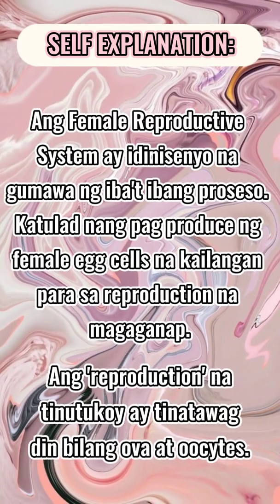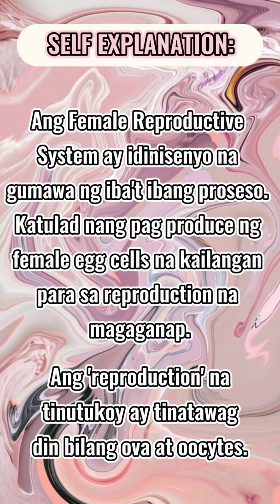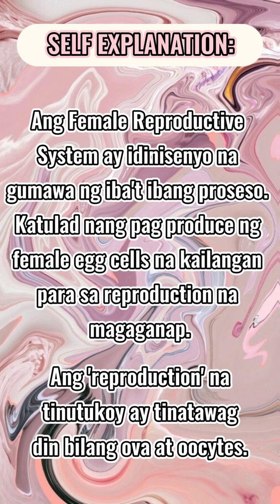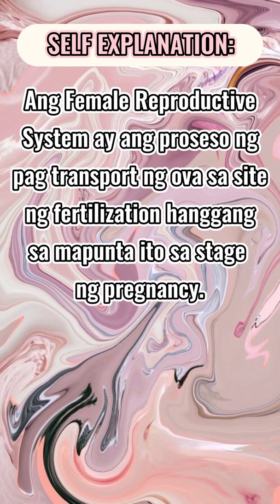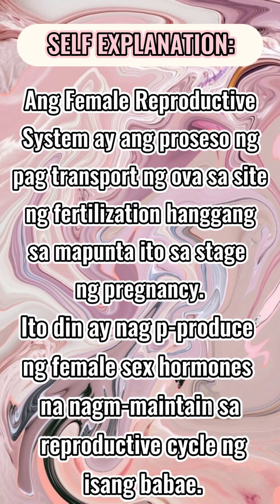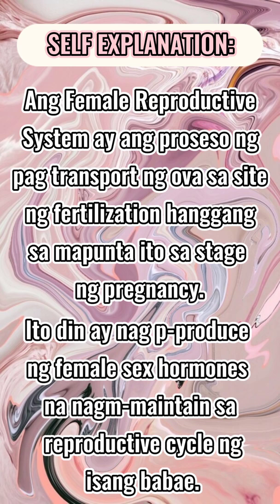Ang female reproductive system ay idinisenyo na gumawa ng iba't ibang proseso katulad ng pagproduce ng female egg cells na kailangan para sa reproduction. Ang tinutukoy ay tinatawag din bilang ova at oocyte. Ang female reproductive system ay ang proseso ng pagtransport ng ova sa site ng fertilization hanggang sa mapunta ito sa stage ng pregnancy. Ito din ay nagpo-produce ng female sex hormones na nagme-maintain sa reproductive cycle ng isang babae.